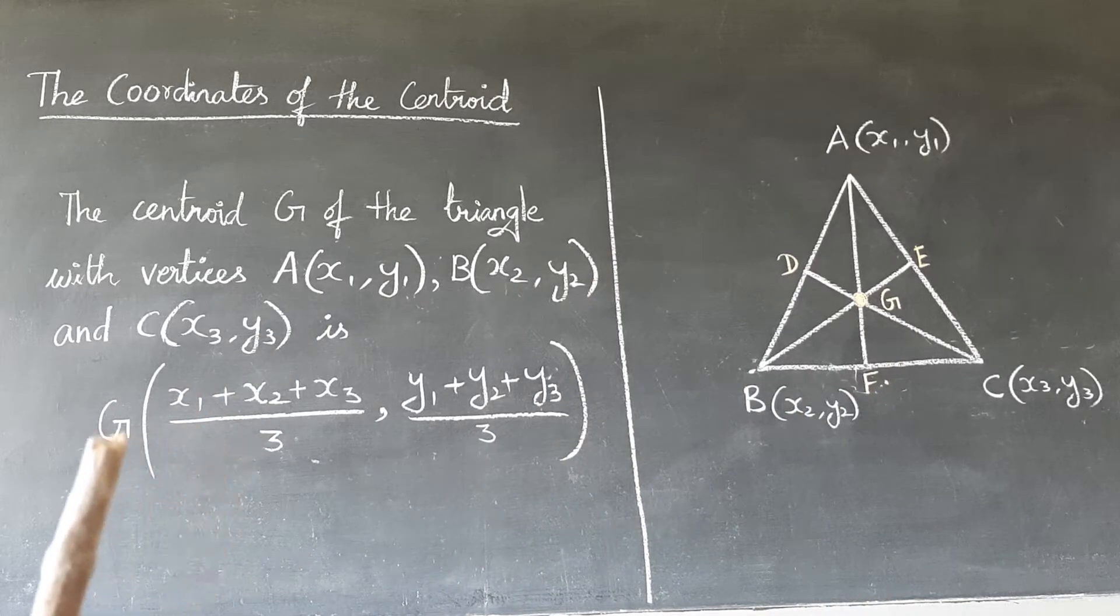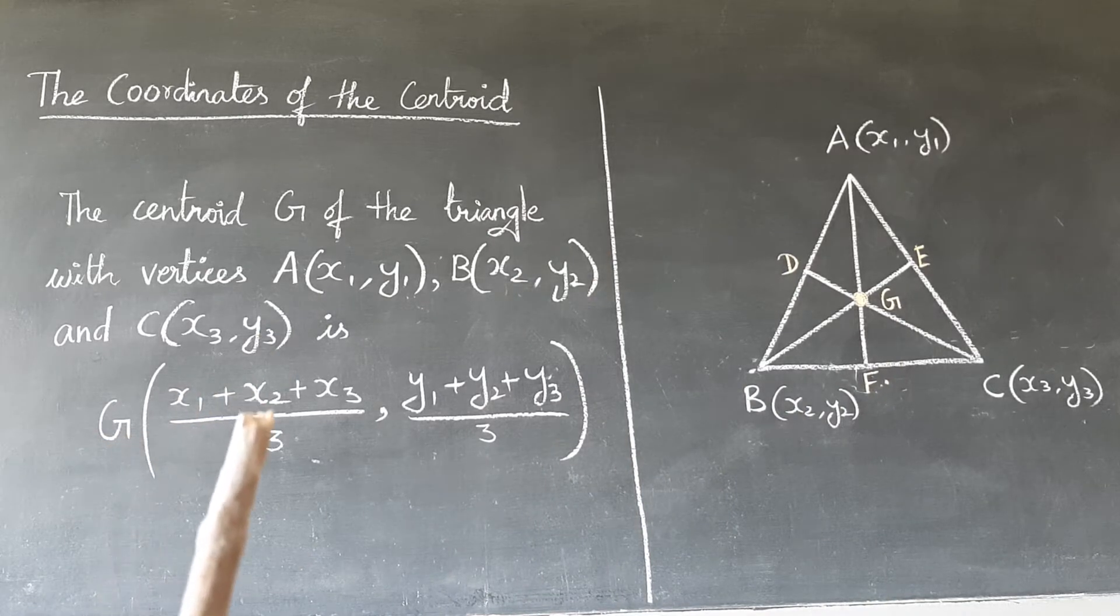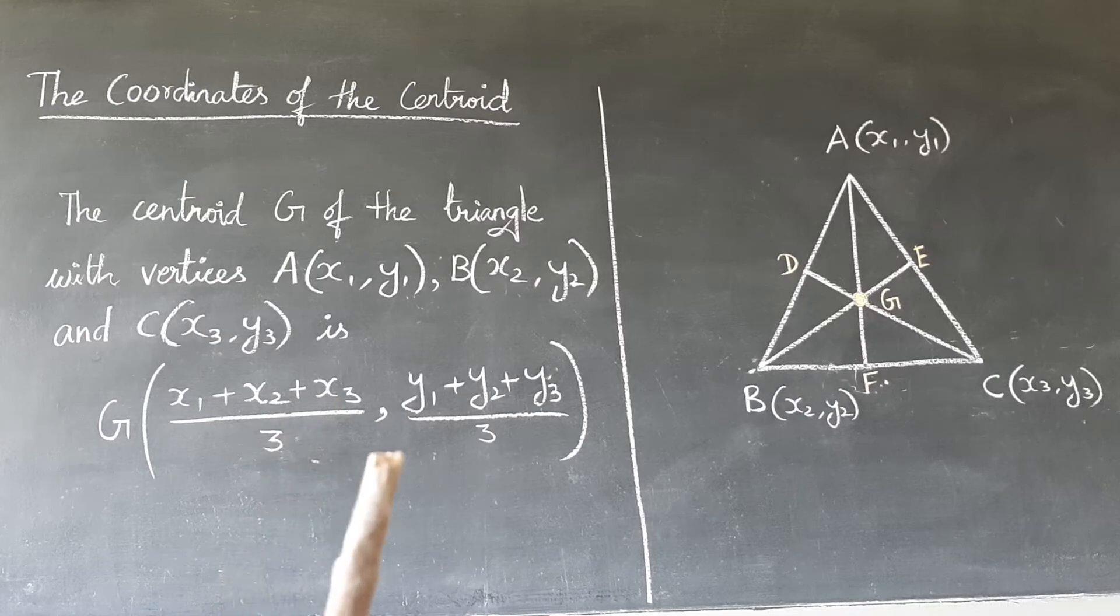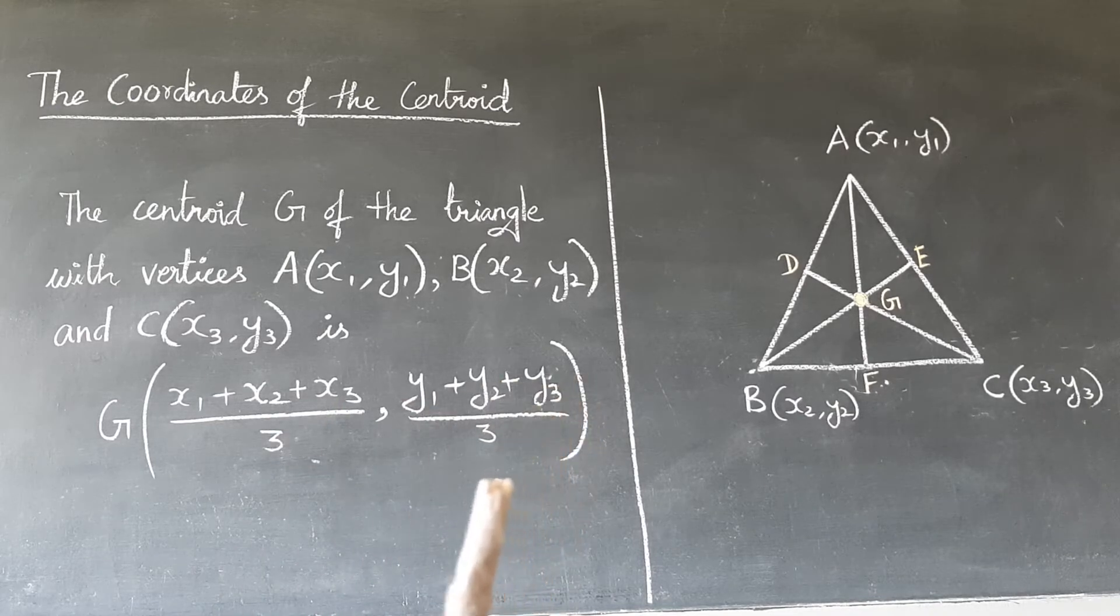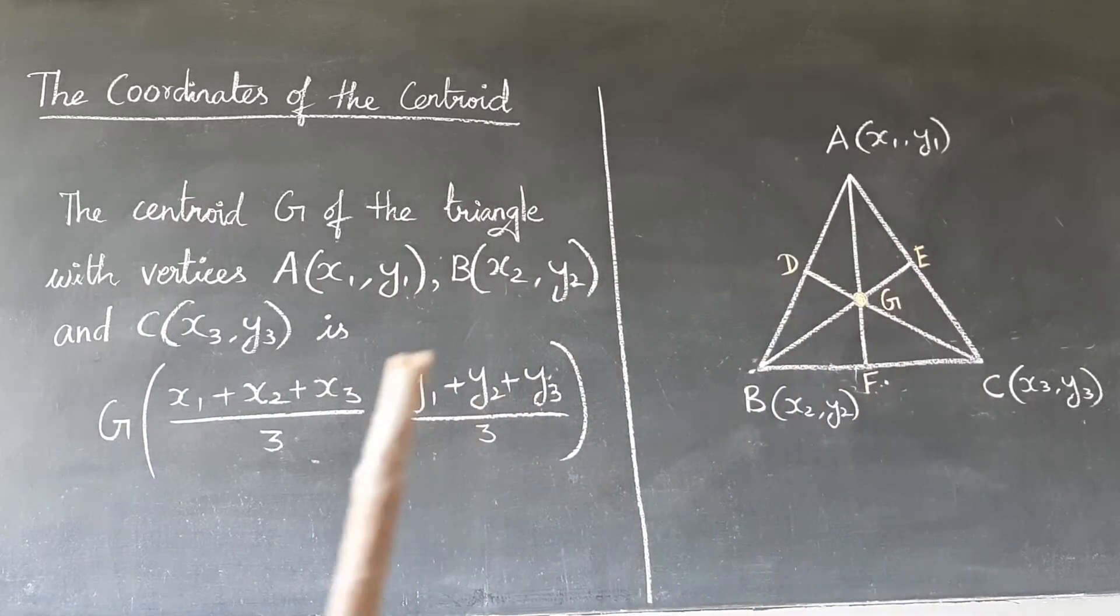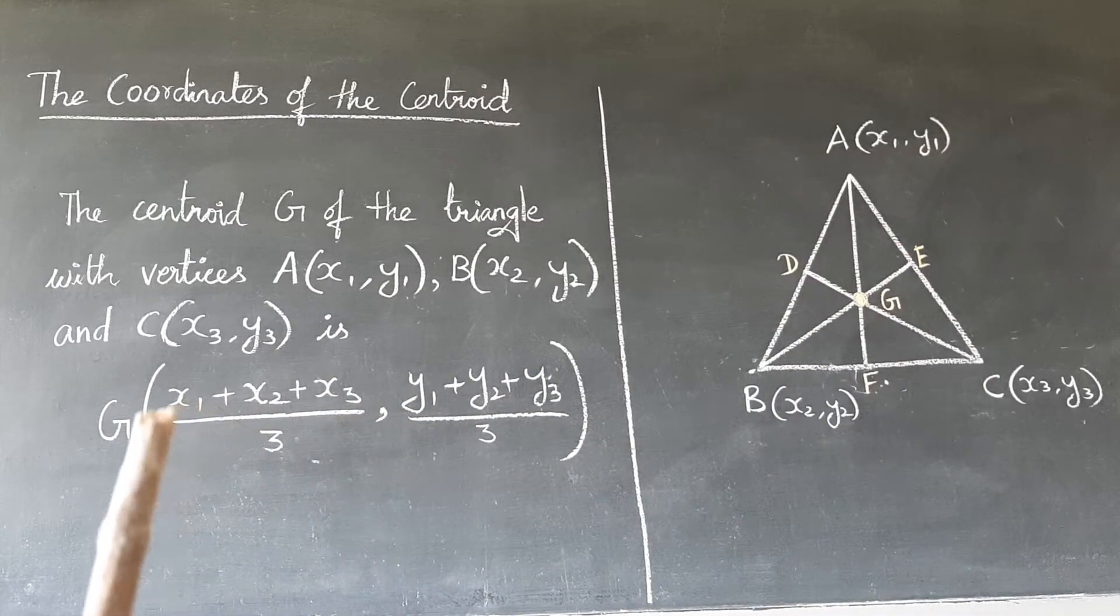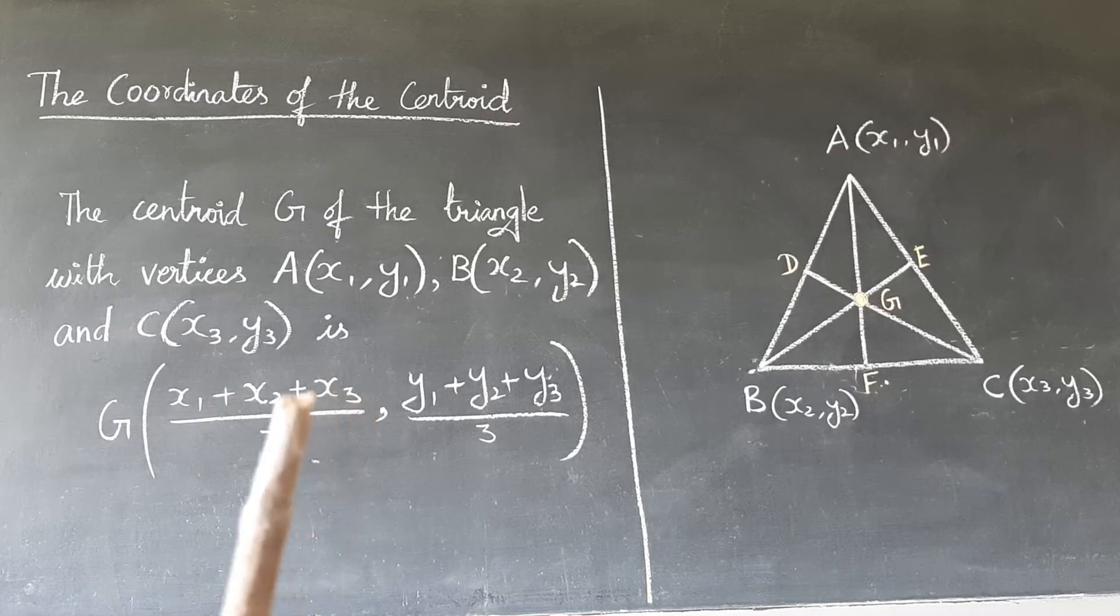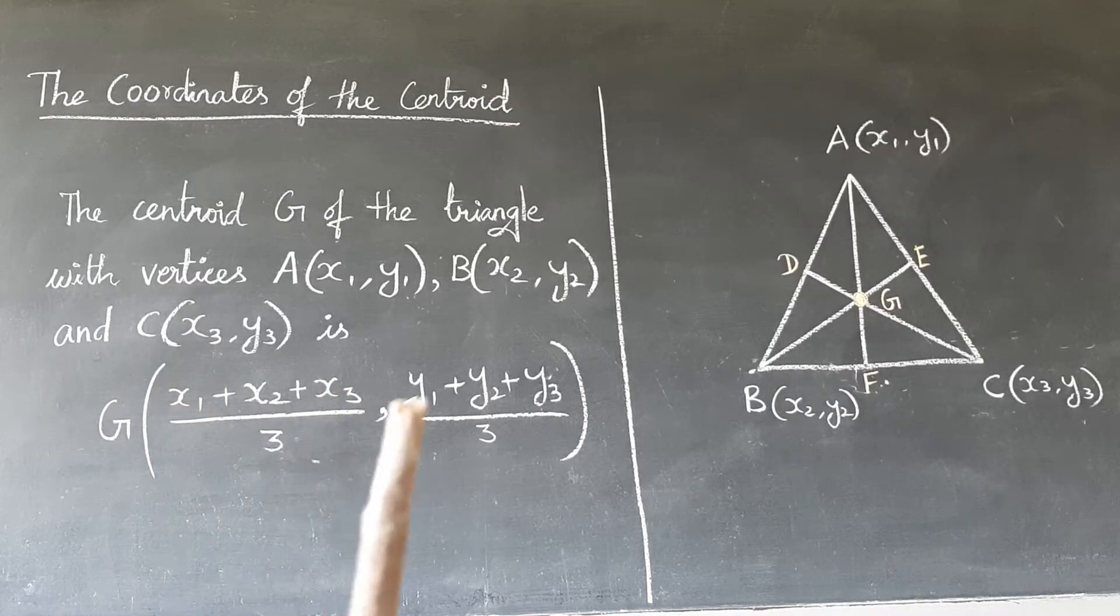This is the formula: G of (x₁ + x₂ + x₃)/3, (y₁ + y₂ + y₃)/3. The centroid from three points we find. So x₁, x₂, x₃ by 3, and y₁, y₂, y₃.